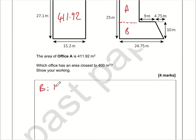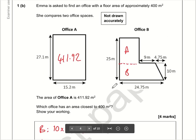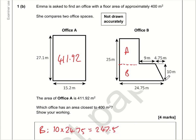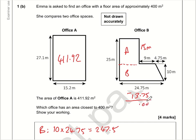Starting with rectangle B — that is simply 10 multiplied by 24.75, which is 247.5. For rectangle A, we need to work out its dimensions. If the whole thing is 25 metres and this part is 10, then this side is 25 minus 10 — that is 15 metres. And the other dimension: we know it's 24.75 across in total, and we know it's 9 and 4.75, so that's 13.75. Taking 13.75 from 24.75 — the 0.75s cancel — so it's just 24 minus 13, which is 11.